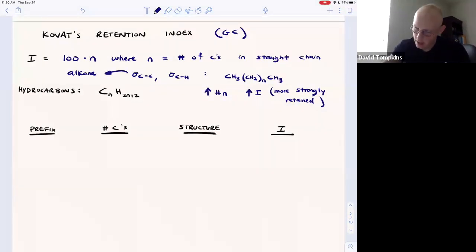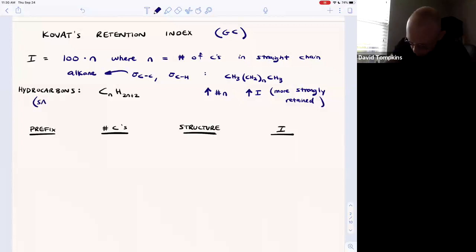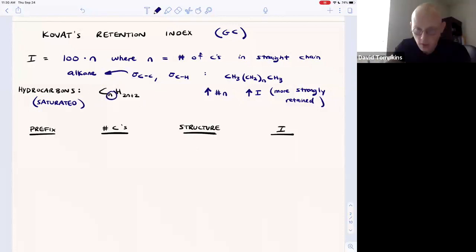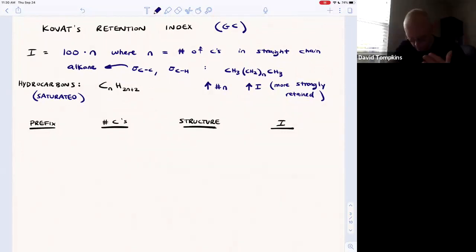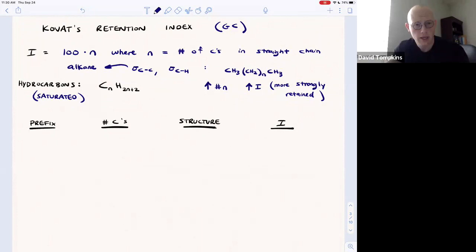Hydrocarbons that are saturated, or have the maximum number of hydrogens, have this formula where there's N number of carbons and twice that plus two number of hydrogens, 2N plus 2. If you haven't had organic chemistry yet, I'm going to give you some common prefixes that tell you how many carbons are in the longest continuous chain.